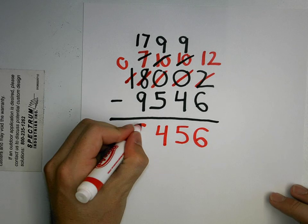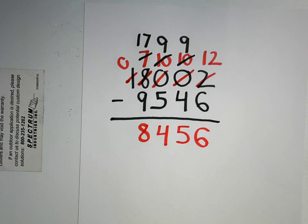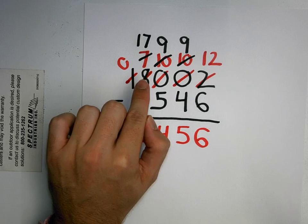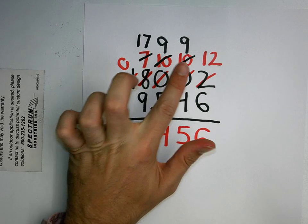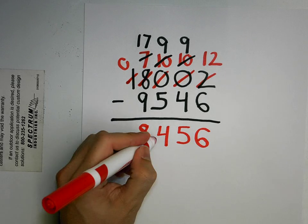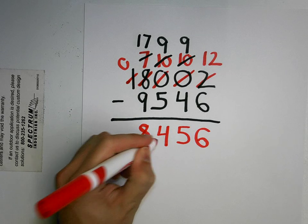So I had to regroup eight different times. Okay, so it is a long process when you have a lot of zeros. Okay, but the answer is eight thousand four hundred fifty-six.